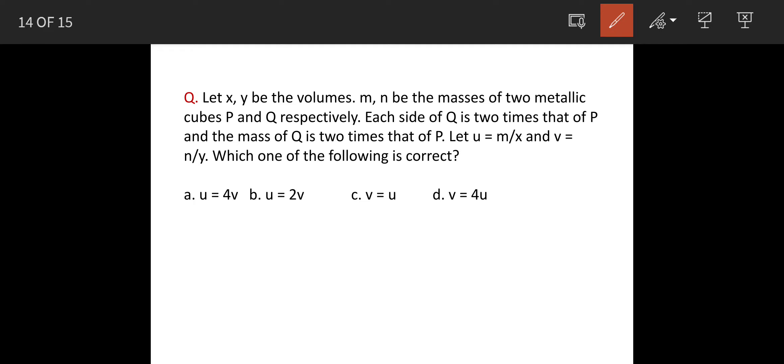So, the question is: let X and Y be the volumes and M and N be the masses of two metallic cubes P and Q respectively. Each side of Q is two times that of P.